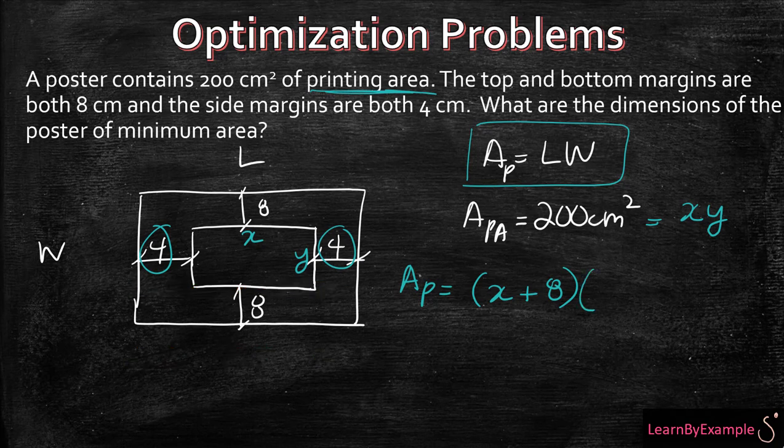Instead of saying W, now we can say Y plus 16. So now you have two equations and two unknowns, so you can write one in terms of the other to help you find the answer that you're looking for.